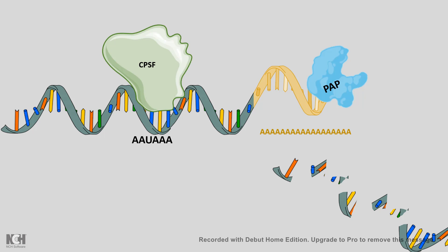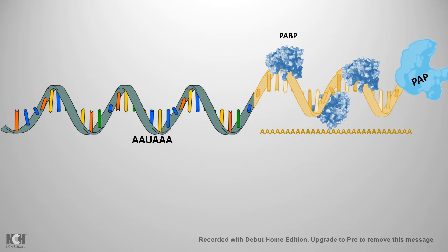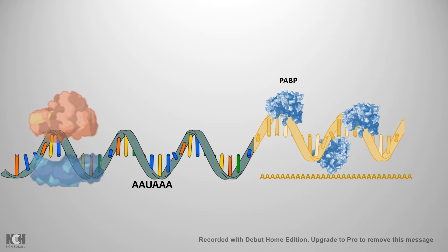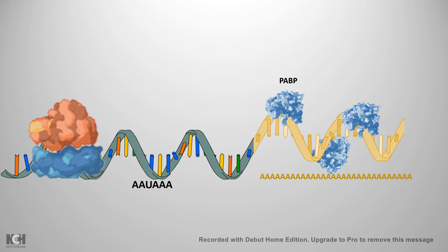Once polyadenylation is complete by poly-A polymerase, poly-A binding proteins bind to those specific poly-A sites at the tail of the mRNA. It has been shown that polyadenylation increases the stability of eukaryotic mRNA — the amount of time the ribosome engages with the mRNA is more, the number of rounds the mRNA can be translated is more, and the amount of protein produced is also increased.